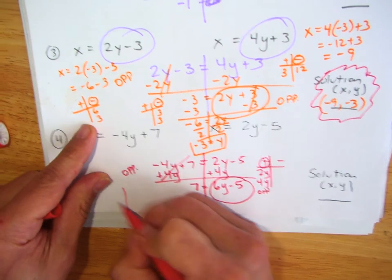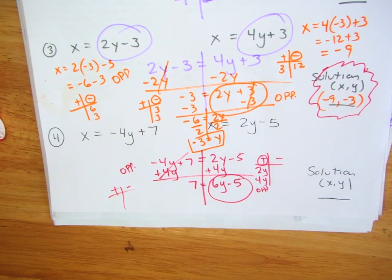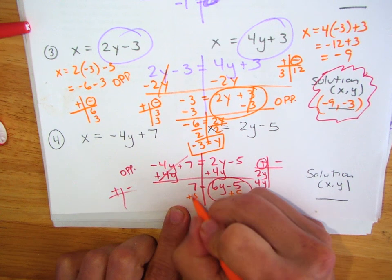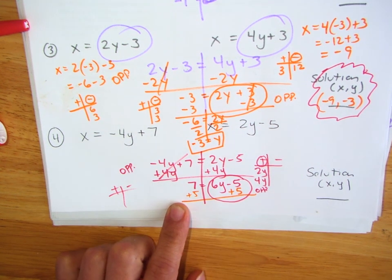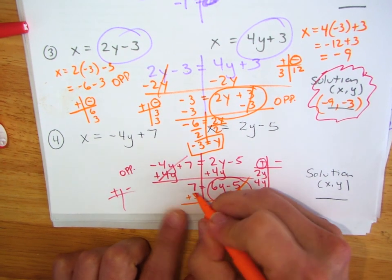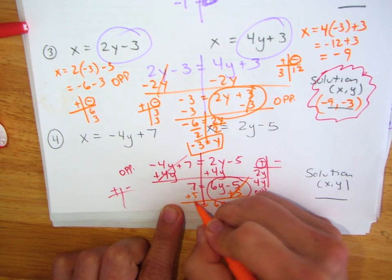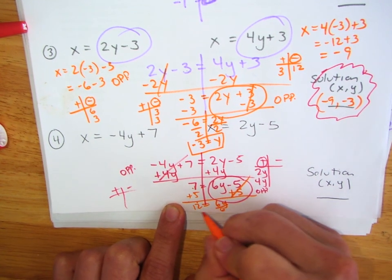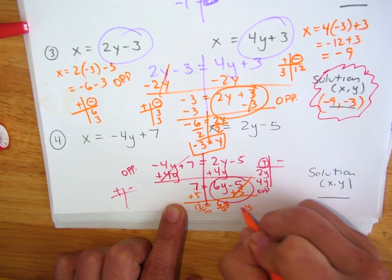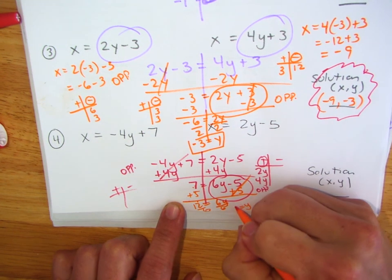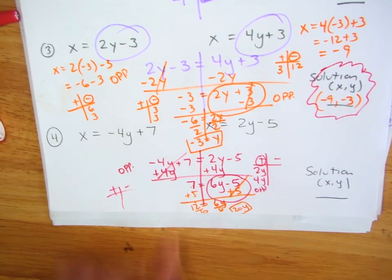T-chart on this side. So 7 plus 5 is 12. Then divide by 6 — the coefficient. And y is 12 divided by 6, which equals 2. Y is 2.